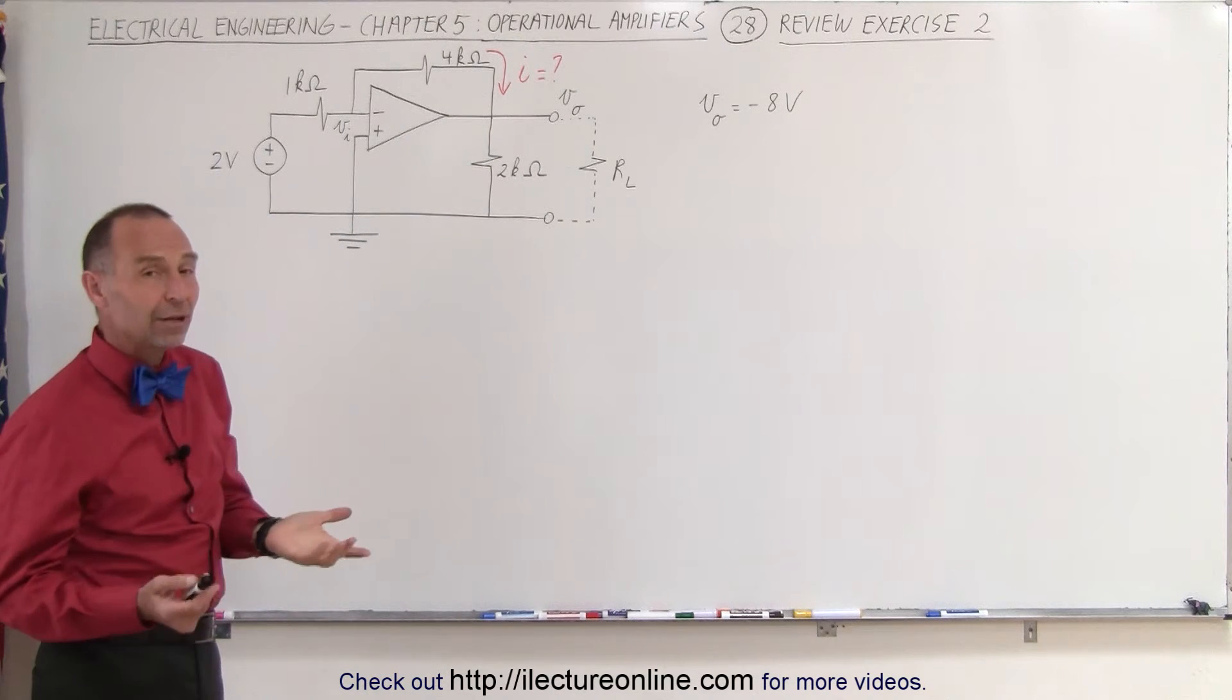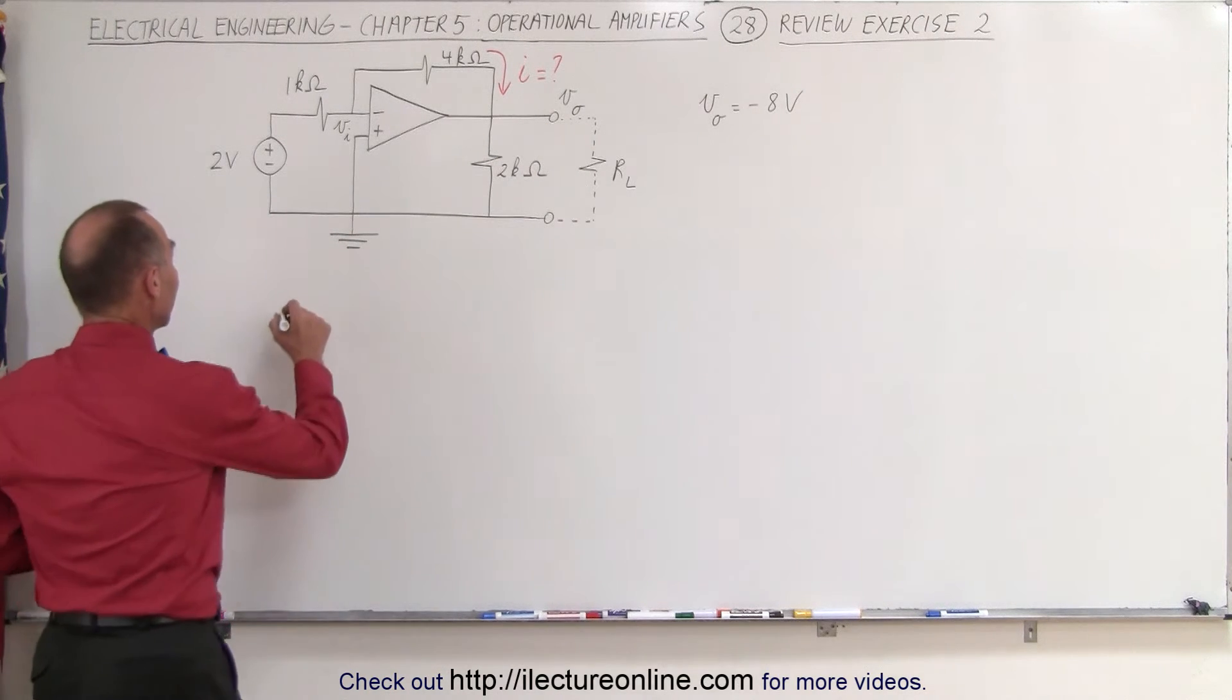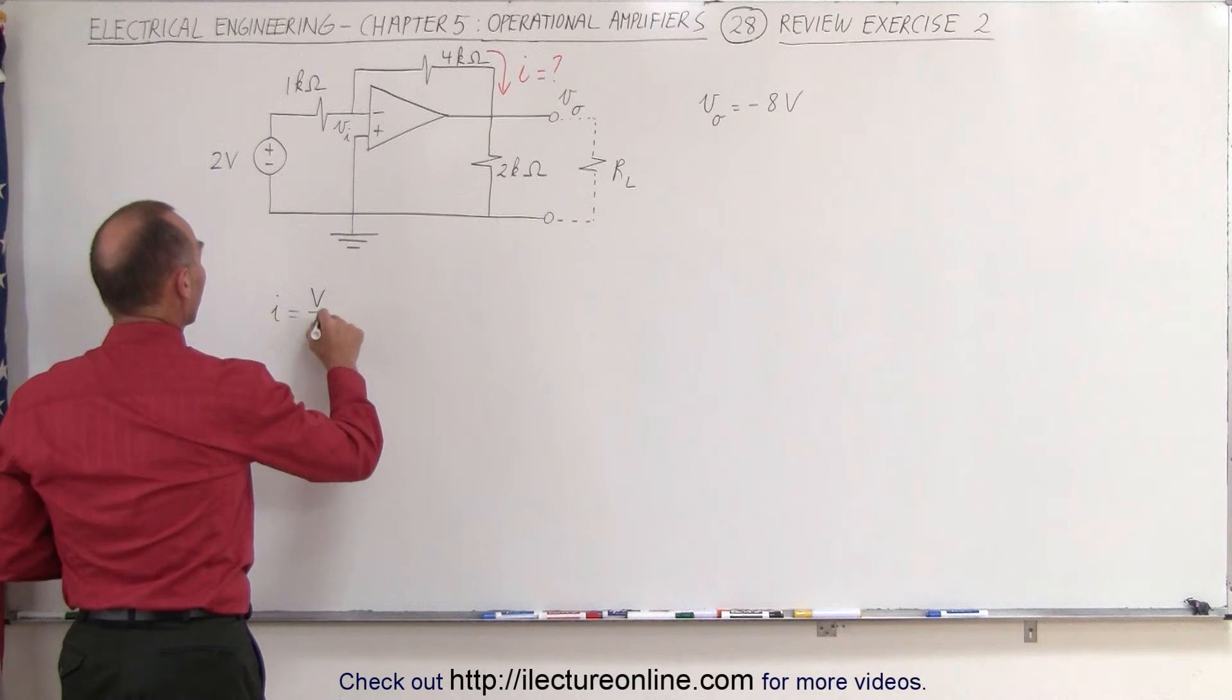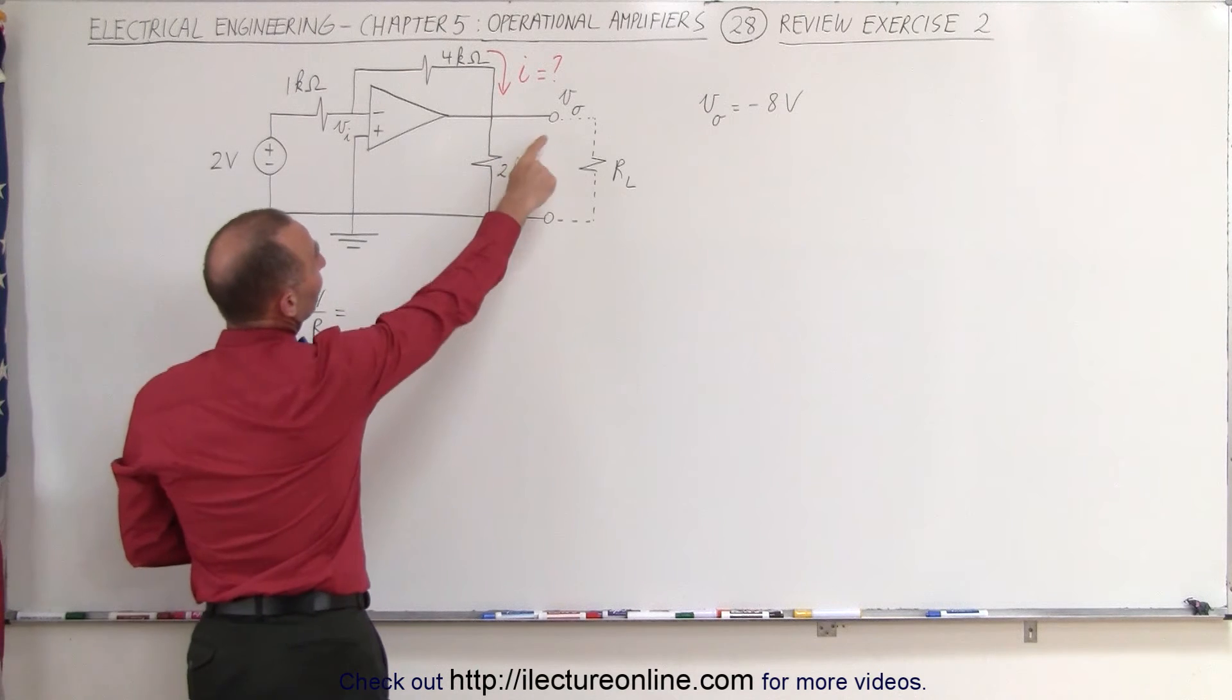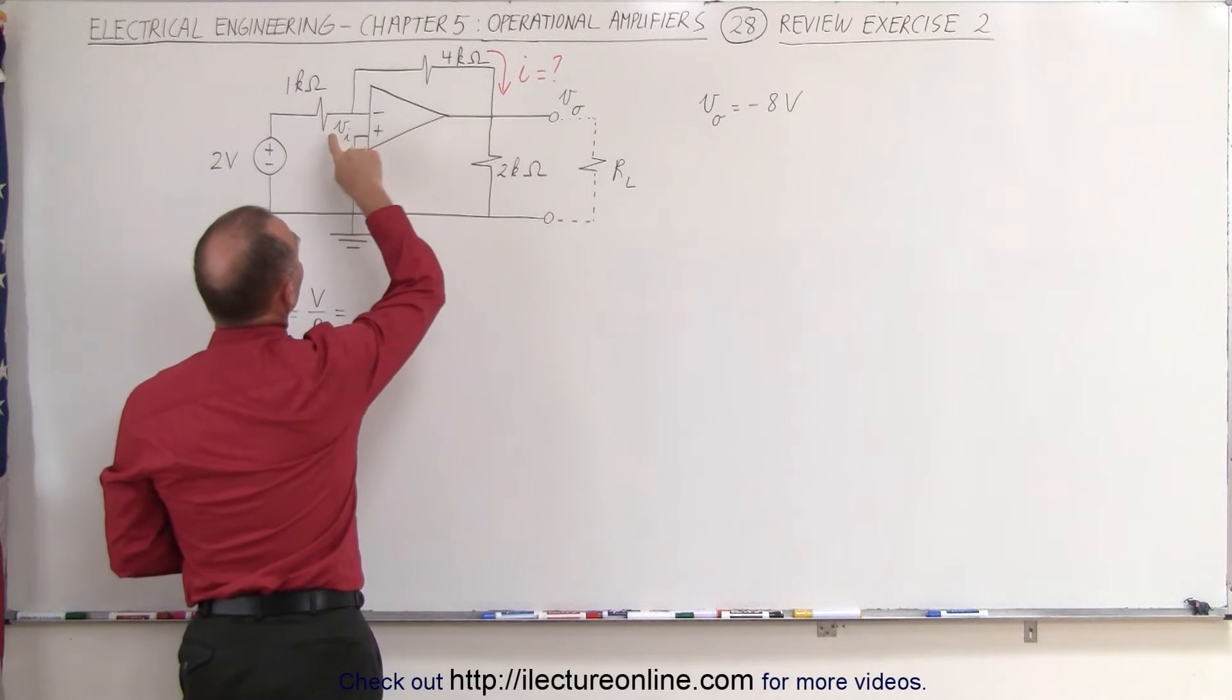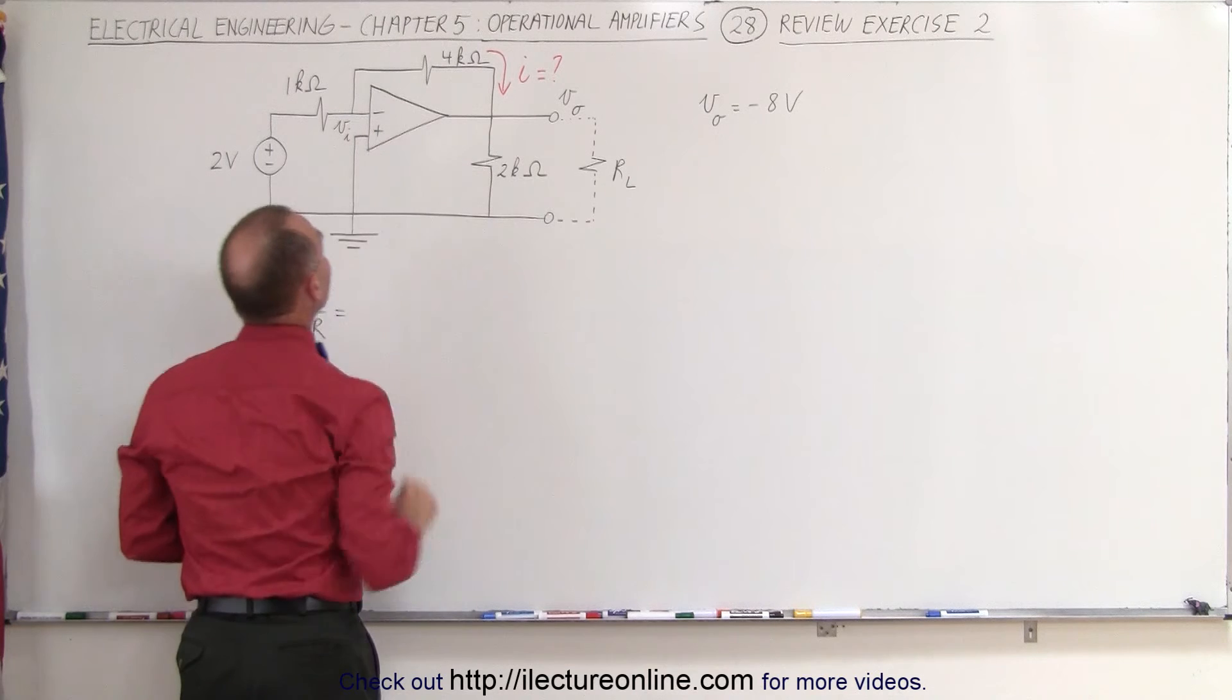Well the way we can do that is using Ohm's law. We can say that I is equal to V over R. Now in this case the voltage is going to be the voltage difference between the output terminal here and the voltage on the inverting input.